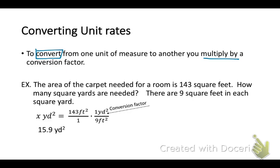If we multiply our 143 square feet by the conversion factor, notice how our units, the feet squared, divide out and we're left with yards squared. So we get 143 over 9 yards squared. If you divide that out, that is 15.9 yards squared.